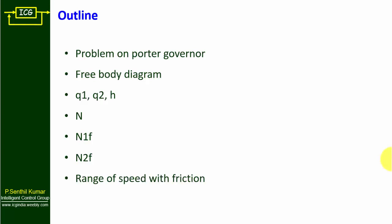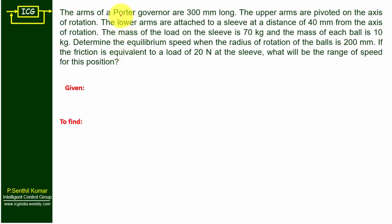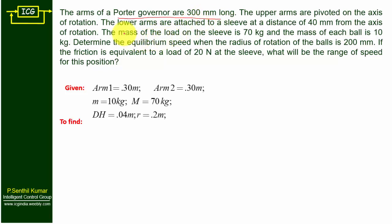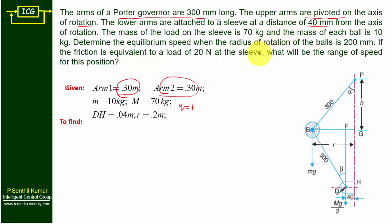The arms of the Porter governor are 300 mm long. The upper arms are pivoted on the axis of rotation, so both upper and lower arms are 300 mm long. This raises the possibility of q equal to 1, but the lower arms are attached to the sleeve at a distance of 40 mm from the axis of rotation. Because of this offset, there is asymmetry between the two triangles, so q is not equal to 1 and we need to find q1 and q2.